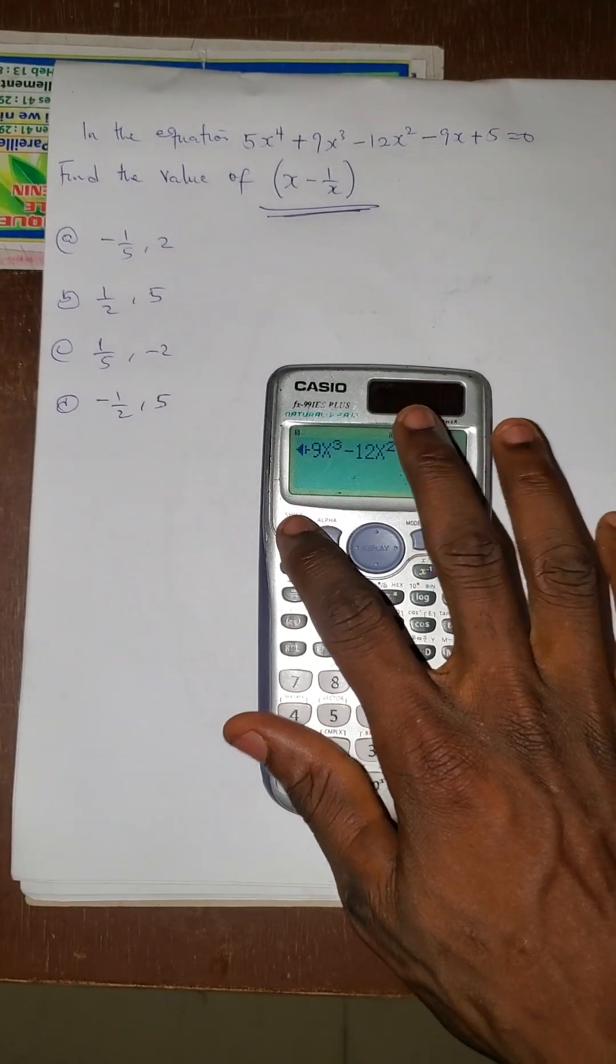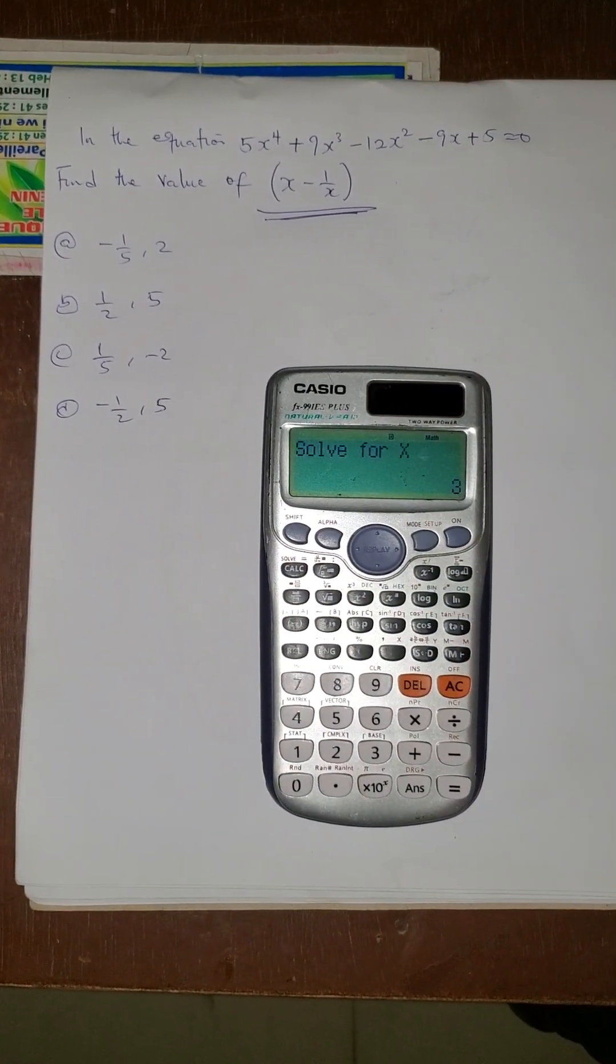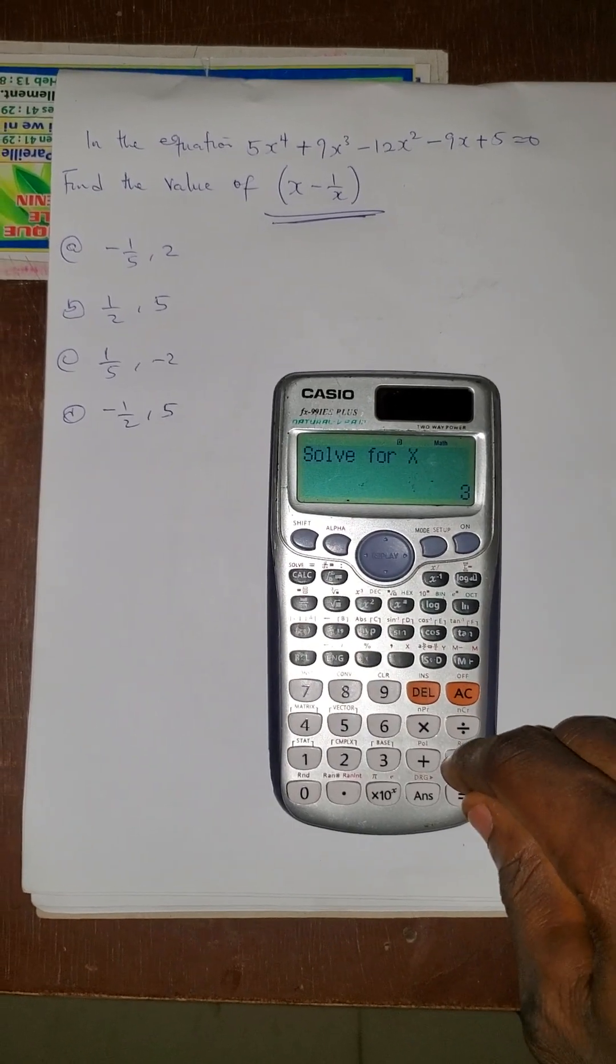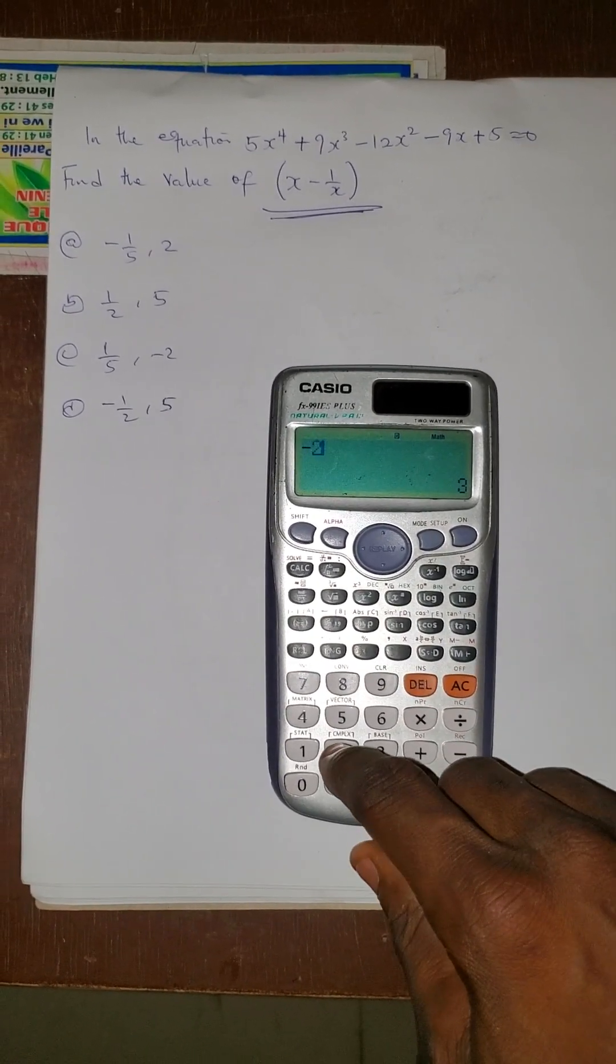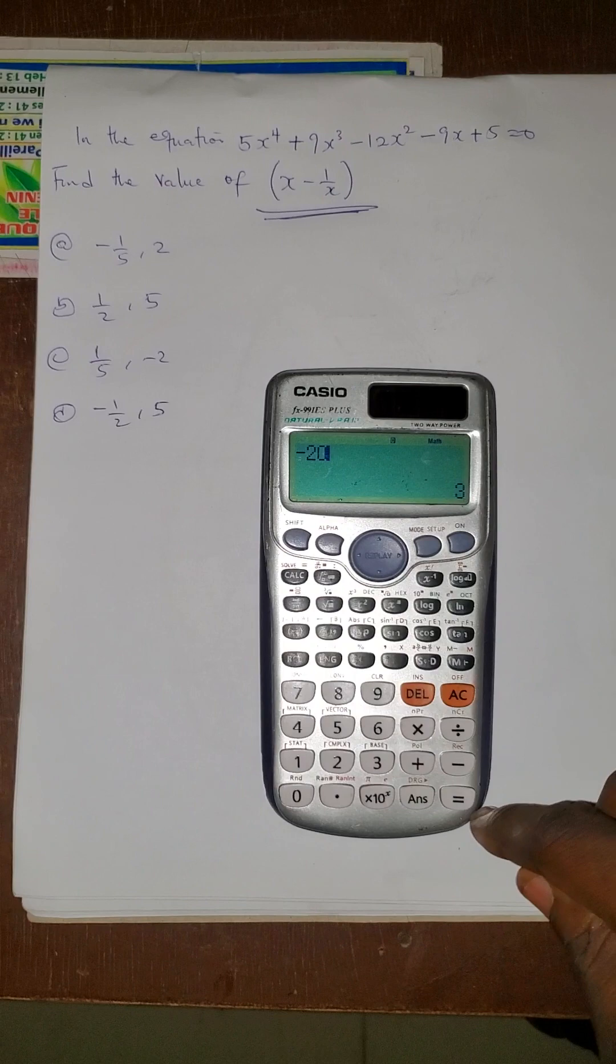Now I will solve for shift calculate. If I press shift calculate, it will tell me solve for x, so let me use negative number first. I'll use negative number like -20.